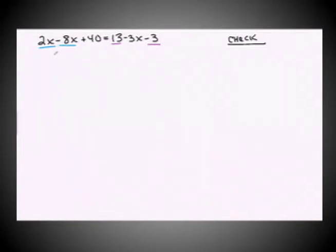Simplification. 2X and negative 8X gives negative 6X. And then I have the plus 40. And that equals, well when I combine 13 and negative 3, that gives 10. And then I have a negative 3X.